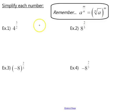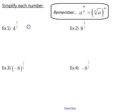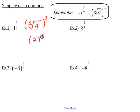Here we want to simplify each number. First we convert from exponential notation into radical notation. We take a base of 4 and put it underneath the radical. The index is 2 and the whole thing is raised to the third power. We take the square root of 4, which is 2, and then 2 cubed gives a simplified answer of 8.